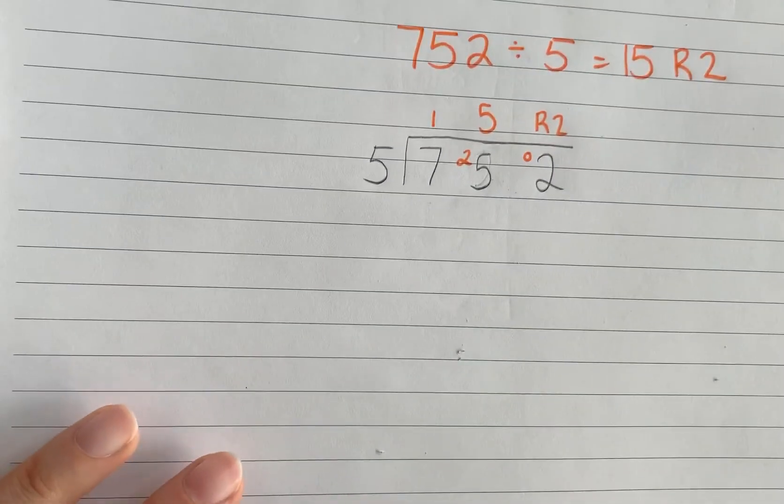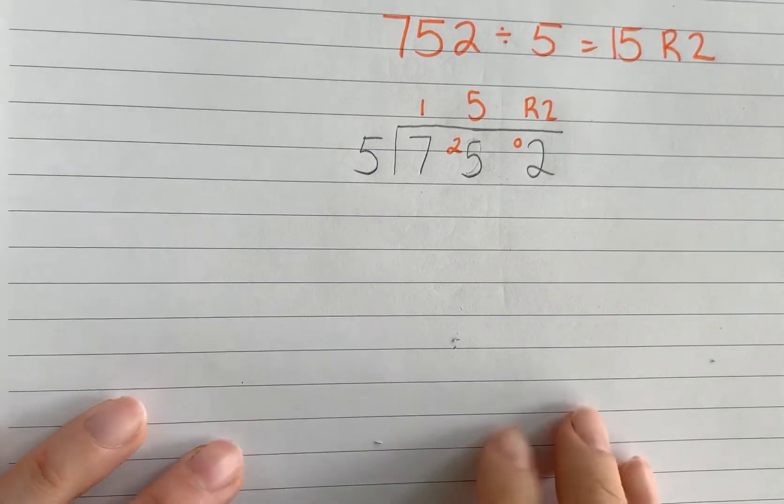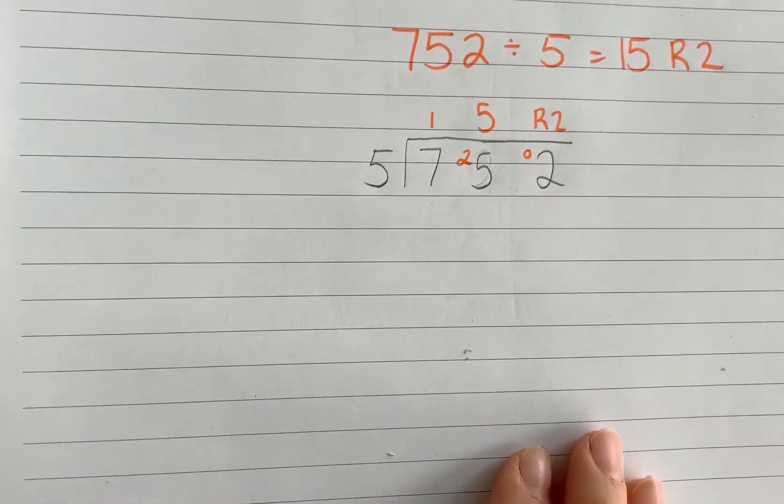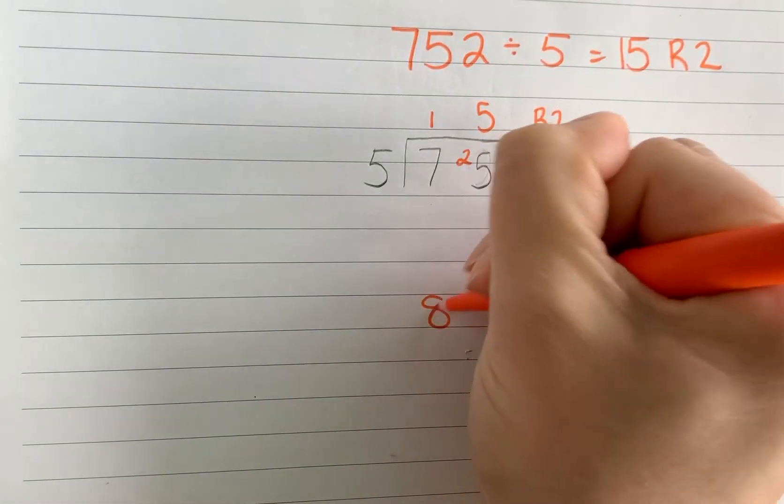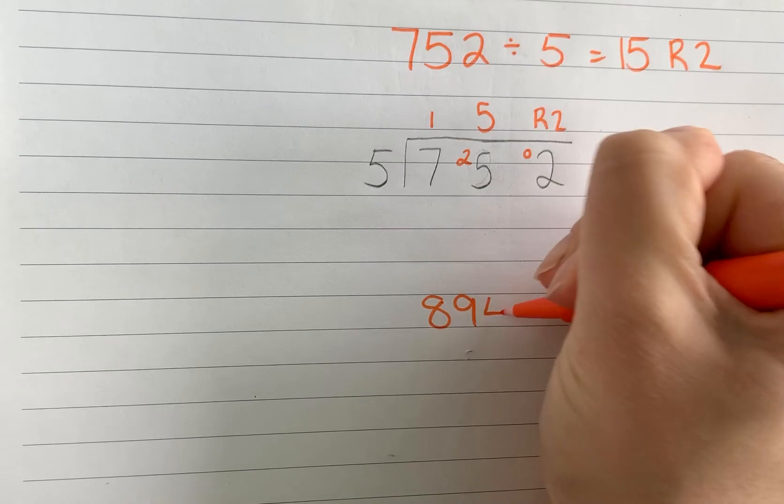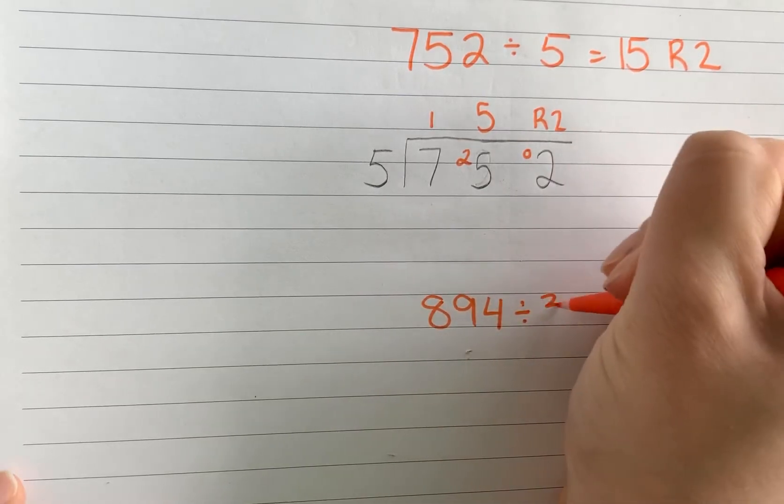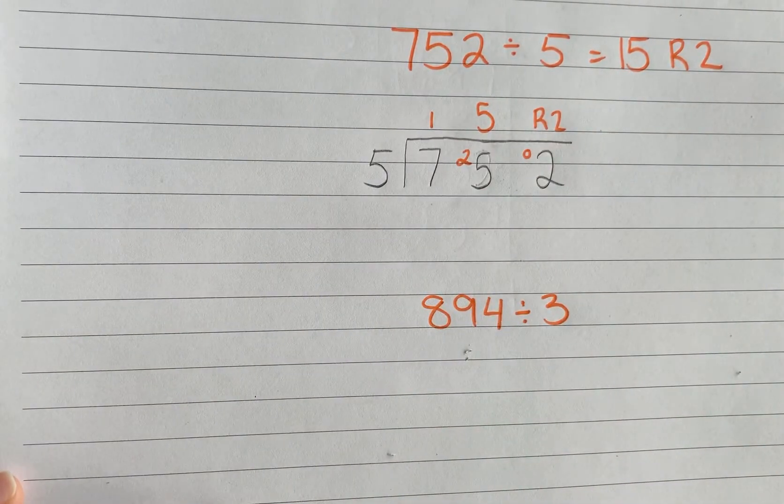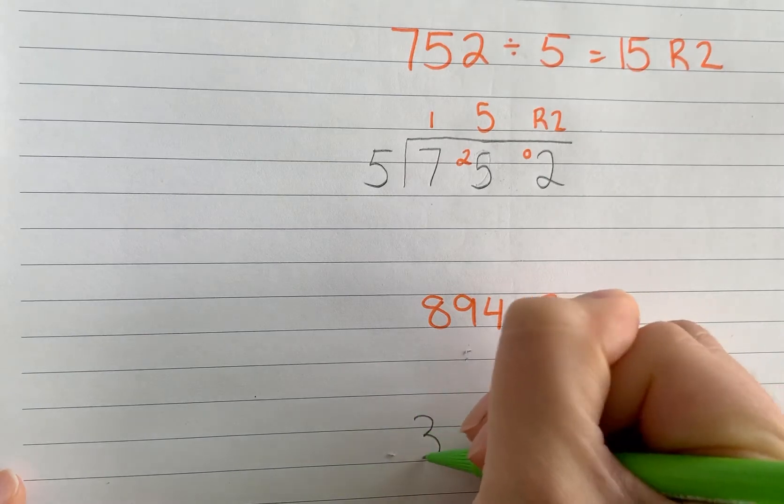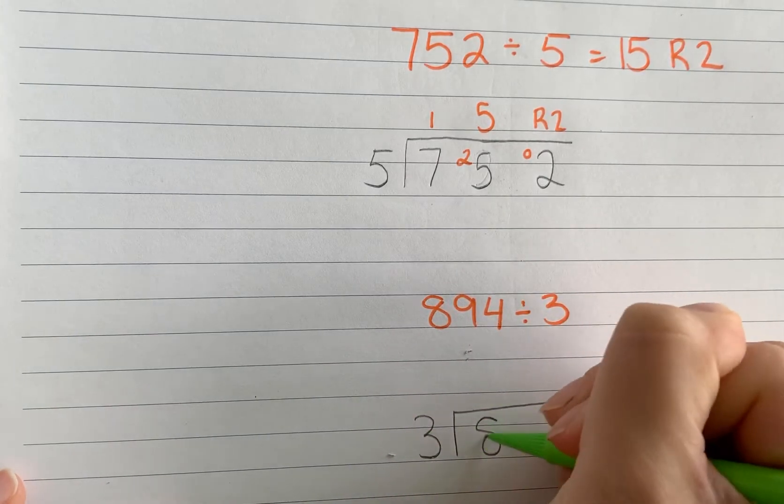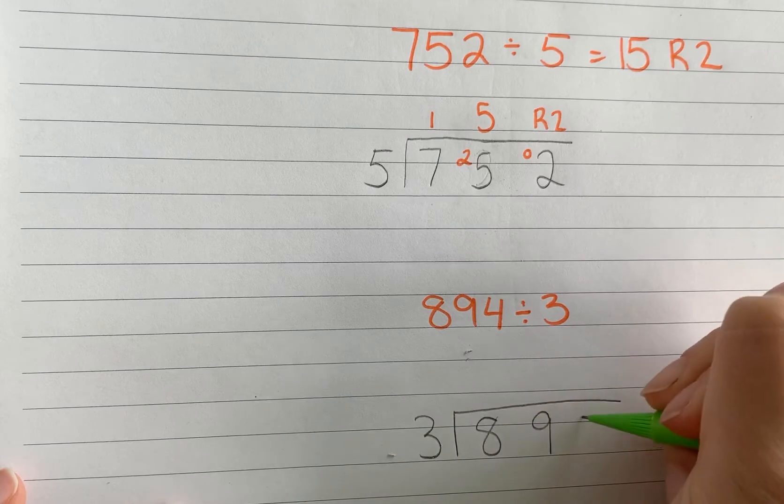Let's try another one. Let's do 894 divided by 3. Okay, set it up that same way. 3 on the outside going into 894.